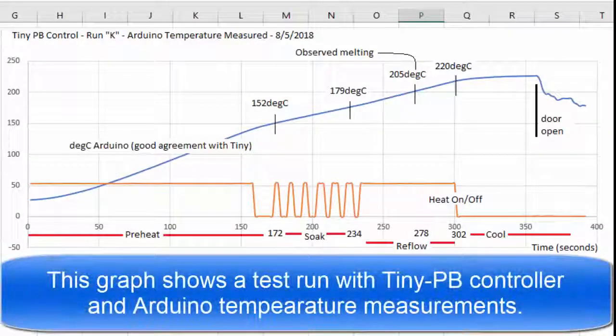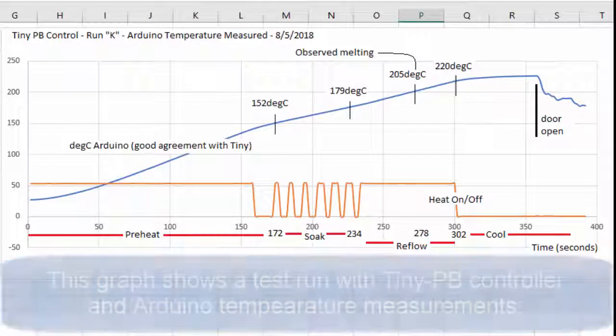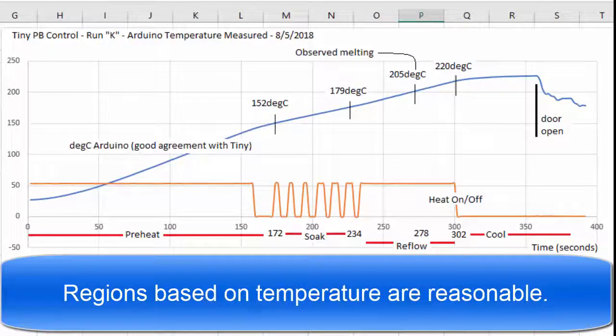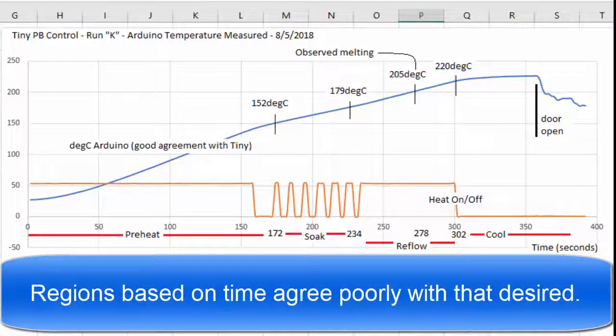This graph shows a test run with the tiny PB controller and the Arduino temperature measurements. Regions based on temperature are reasonable. Regions based on time agree poorly with that desired.